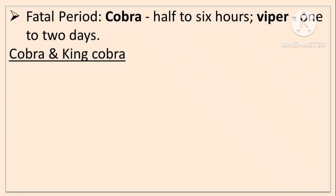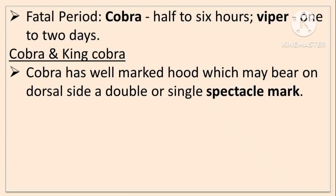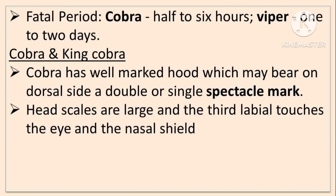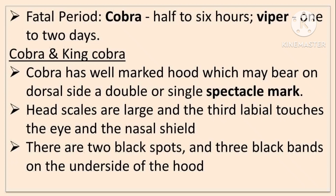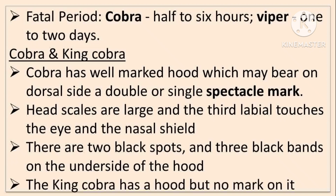Cobra has a well-marked hood which may bear on its dorsal side a single or double spectacle mark. A variety called Monocled Cobra has a round mark. Head scales are large — an exception to the rule for poisonous snakes. The third labial touches both the eye and the nasal shield. There are two black spots and three black bands on the underside of the hood. King Cobra has a hood but no mark on it.